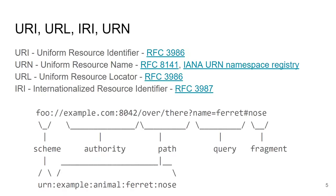Before we get to the RDF data model and its serializations, we need to talk about the identifiers used on the web of data. I already mentioned URIs, URLs, and IRIs, and maybe mixed them up a little in the introduction. So let's be clear about what each of those means. We have four similar acronyms for identifiers used on the web: URI, URL, IRI, and URN.